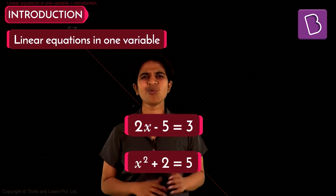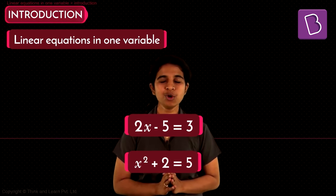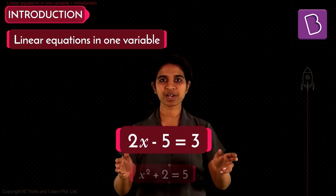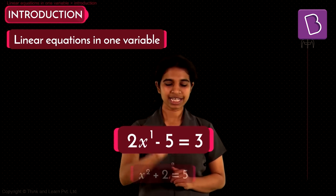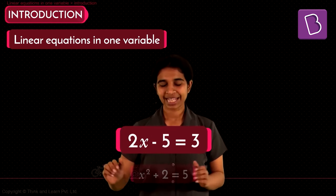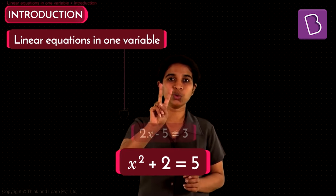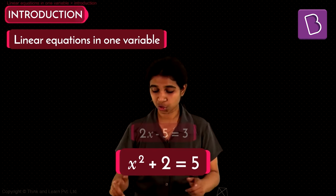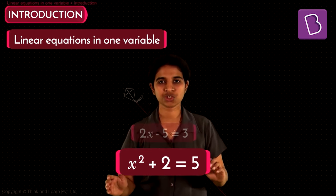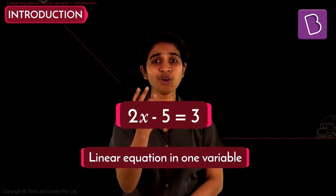It has an equal-to sign, it is an equation, it has only one variable. Now, what does 'linear' mean? Linear refers to the highest power of the variable. In the first equation, 2x − 5 = 3, the highest power of x is 1, since x is just x raised to 1. In the second equation, x² + 2 = 5, the power of x is 2. So the second equation is not a linear equation because the power of x is 2 — get rid of it.